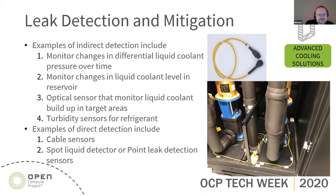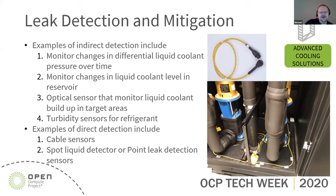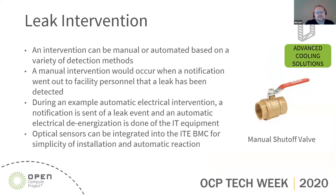For direct detection, we actually try to sense a pool of cooling fluid. Cable sensors can be placed around the bottom of a rack or CDU, especially routed where there are interfaces and points of failure — if there's a leak it'll drip down, touch the cable, and generate a signal. Similarly, a spot leak detector is handy where you have containment like a pan; at the lowest point in the pan you'd place a point leak detector. Cable sensors are one of the more common ways of detecting leaks.